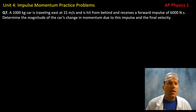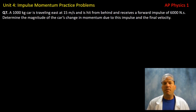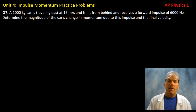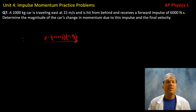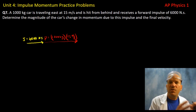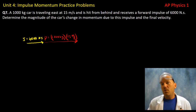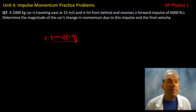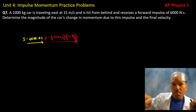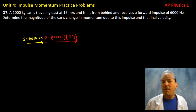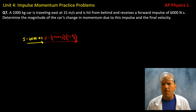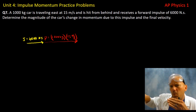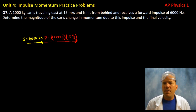Question seven: a 1,000-kilogram car travels east at 15 meters per second and receives a forward impulse of 6,000 newton-seconds. The impulse is in the same direction as travel — to the east — so it's positive. We're asked for the car's change in momentum and final velocity. By the impulse-momentum theorem, impulse equals change in momentum.